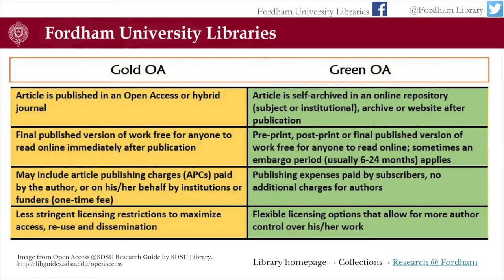There are a couple of different models of open access. Gold is the gold standard — things are published on an open access platform from the start, meaning the final edited formatted version is freely available with very few restrictions. The model that is perhaps more common right now is Green, which means an article is archived in an open access repository after the fact. A great example is our institutional repository, B-Press, called Research at Fordham. It can take work you've published in other journals and make it freely and openly available through our repository, with very few restrictions and broader worldwide availability.